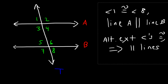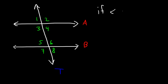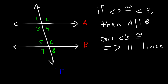The next term to be familiar with is corresponding angles. Angles 2 and 6 are corresponding angles. If those two angles are congruent to each other, then line A will be parallel to line B. So if the corresponding angles are congruent, then the lines will be parallel.